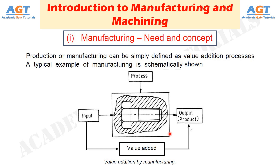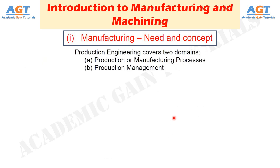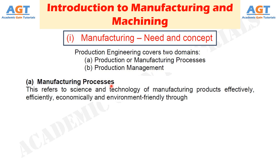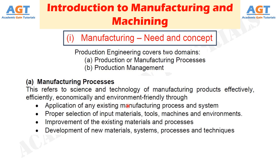Production engineering covers two domains: Number 1, Production or Manufacturing Processes; and Number 2, Production Management. Manufacturing Processes refers to the science and technology of manufacturing products effectively, efficiently, economically and environment-friendly through the application of existing manufacturing processes and systems, the proper selection of input materials, tools, machines and environments, improvement of existing materials and processes, and the development of new materials, systems, processes and techniques.